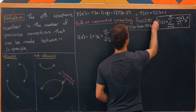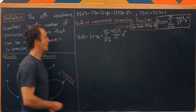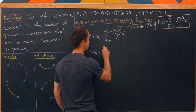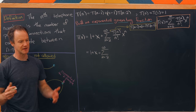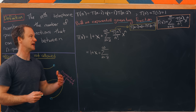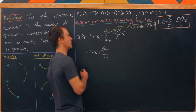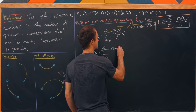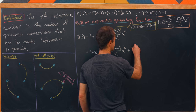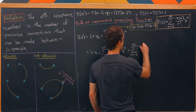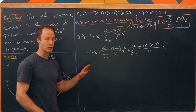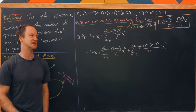Splitting the sum into two pieces gives us 1 + x, plus the sum of t(n−1) over n factorial times x to the n, plus the sum of (n−1)·t(n−2) over n factorial times x to the n. We then re-index these sums: for the first, replace n with n+1, so the lower limit becomes 1; for the second, replace n with n+2, so the lower limit becomes 0.